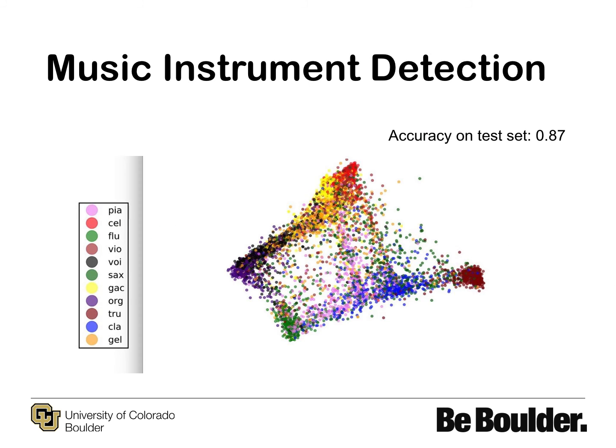We apply the same algorithm for detecting musical instruments. In the figure shown, the wind instruments get clustered at the bottom, while the string instruments are clustered at the top. However, keyboard instruments are considered both string and wind instruments — for example, piano. Piano is represented by pink in this figure. The piano has strings but they are struck by hammers, so it is not clear whether it should be classified as a string or wind instrument. This confusion can be seen as the pink dots are spread between the two major clusters. Accuracy on the test dataset for this is 87%, using a support vector machine with a radial basis function kernel.